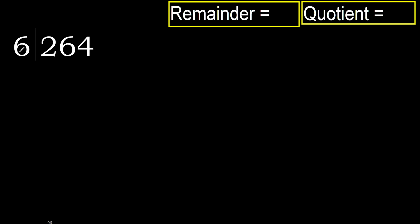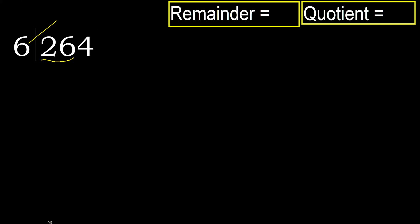264 divided by 6. 2 is less, therefore next. 26 is not less, therefore work with 26. 6 multiplied by which number is nearest to 26 but not greater?